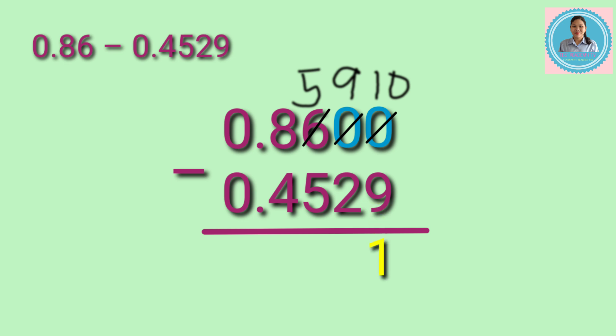Nine minus two equals seven, five minus five equals zero, and eight minus four equals four. No whole numbers to be subtracted, so write zero, then put the decimal point. The answer is 0.4071 ten-thousandths.